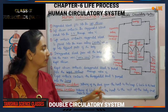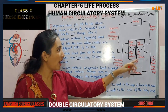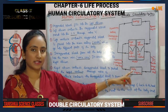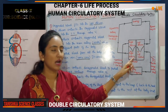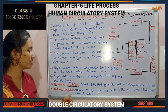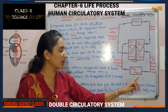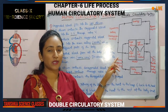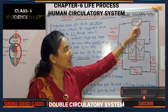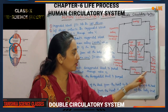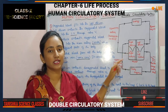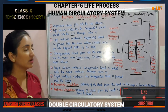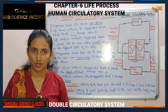In this process, blood transfers through two pathways: pulmonary circulation and systemic circulation. Pulmonary circulation is the pathway of blood from the heart to the lungs and from the lungs back to the heart. Systemic circulation is the pathway of blood from the heart to the rest of the body parts and from the body parts back to the heart. These are the two types of circulation.